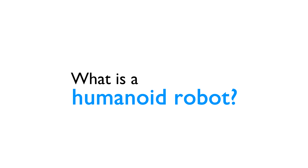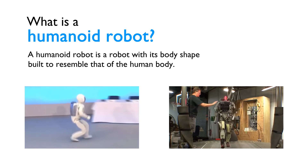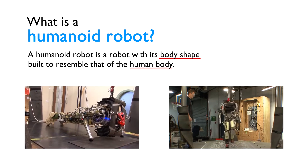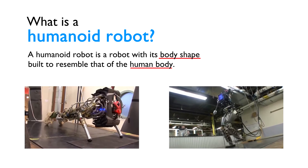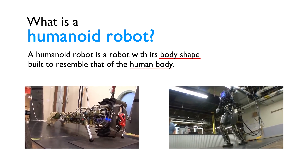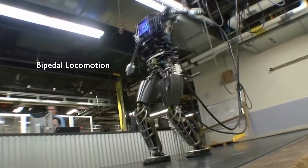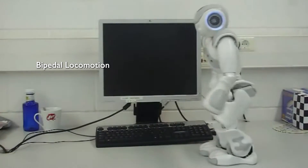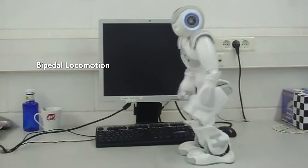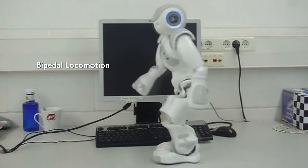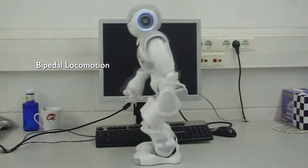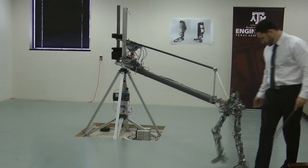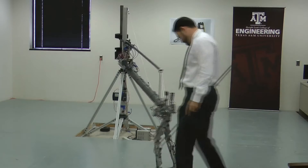A humanoid robot is a robot with its body shape built to resemble that of the human body. Humanoid robots are generally considered to be the most advanced type of robot, due to the way they walk, which is known as bipedal locomotion. That is why most, if not all, humanoid robot development started from building and programming the robot legs first. Researchers know that without stable locomotion, adding other body parts is pointless.